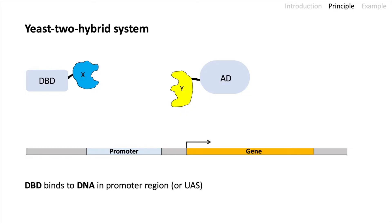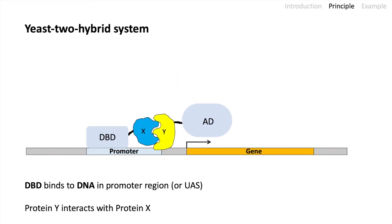What happens? The DNA binding domain will bind to the DNA in the promoter region. If protein X and protein Y interact, as they do in this case here, that will also bring the activator domain close to the gene region. That means RNA polymerase 2 can be recruited, which leads to the transcription of the gene.